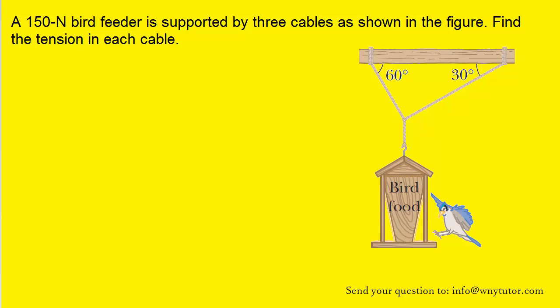Our first step in solving this question is to draw a free body diagram. It might be confusing as to which object we should choose, because we have a bird house and several ropes. But it's all based on the question — the question asks us to find the tension in each cable. So it's most advantageous to choose the object to which all the cables are attached. All three cables are attached to that point, so we'll draw the free body diagram for that point.